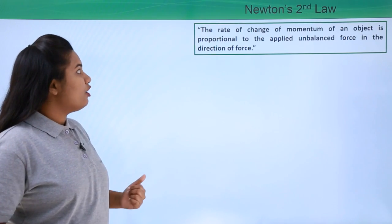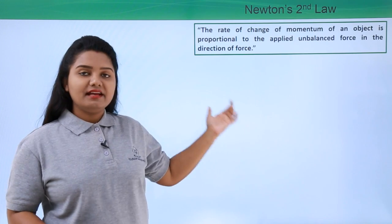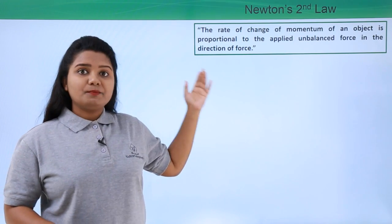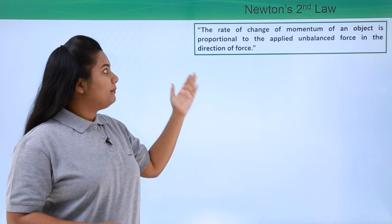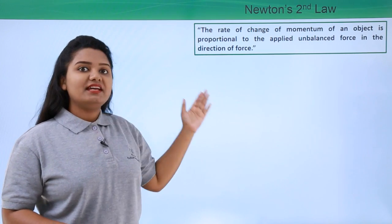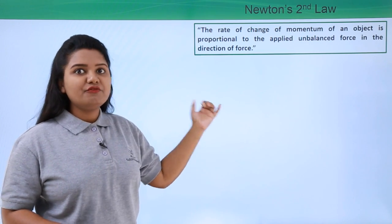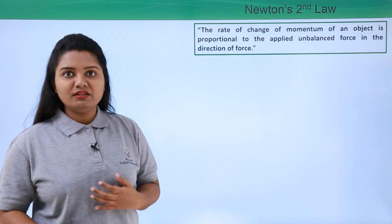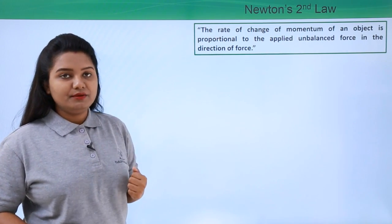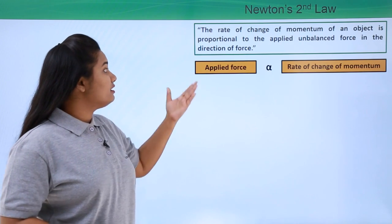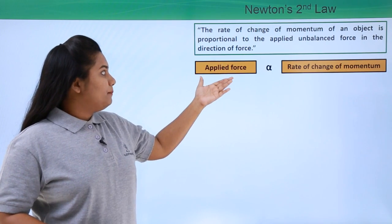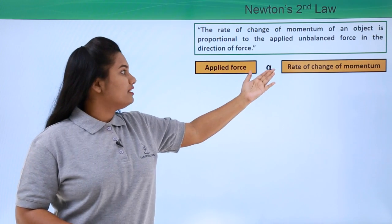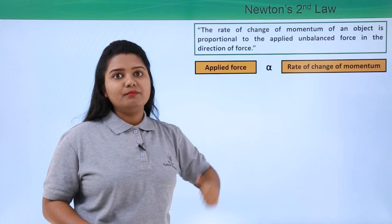The second law of motion states that the rate of change of momentum of an object is proportional to the applied unbalanced force in the direction of force. This is the statement of Newton's second law that we discussed in the previous video, and mathematically we write it as: applied force is directly proportional to the rate of change of momentum.